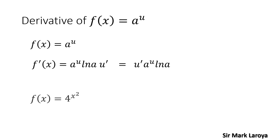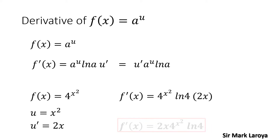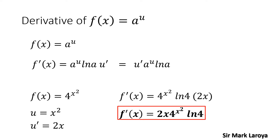Let's have an example: f(x) = 4 raised to x squared, where our base 4 is our a and the exponent x squared is our u. So we first identify our u, that is x squared, and its derivative, u prime, is simply 2x. Applying the formula, our f'(x) = 2x times 4 raised to x squared times ln(4).